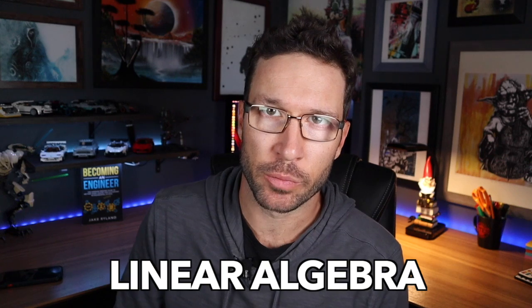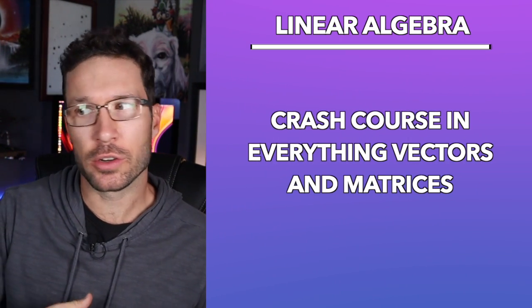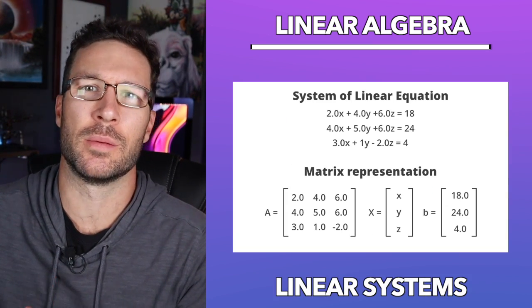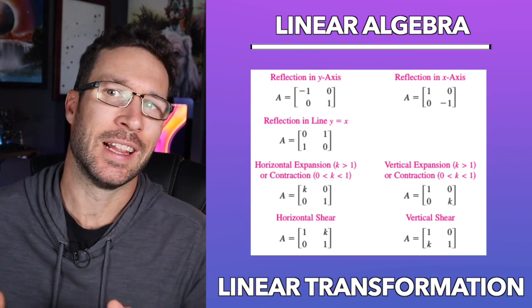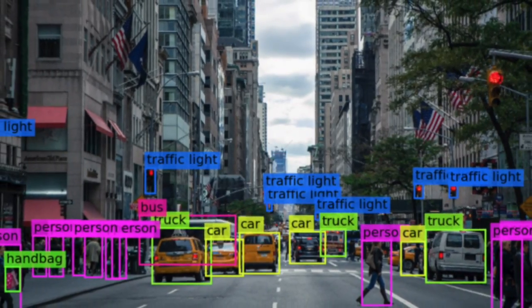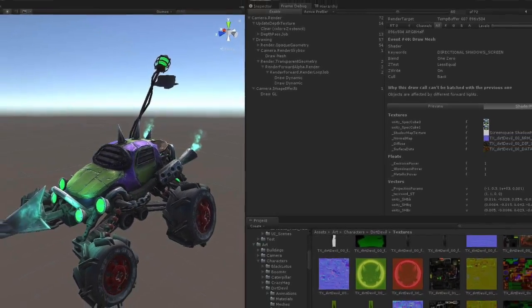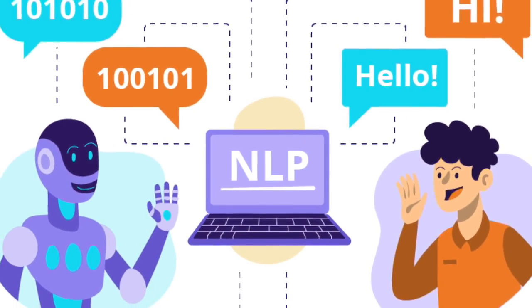Next up in math we have linear algebra. In this course you're going to get a crash course in everything vectors and matrices. Topics include Euclidean spaces, linear systems, Gaussian elimination, determinants, inverses, vector spaces, linear transformation, and linear programming. Linear algebra plays a key role in several aspects of computer science: graphics and computer vision, machine learning and data science, data structures, computer graphics programming, computer networks and optimization, cryptography and security, and natural language processing.